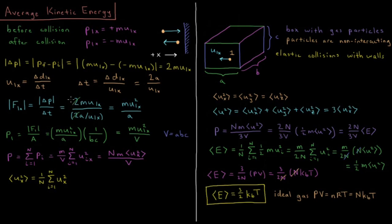So that equals: ΔP has magnitude 2MU₁ₓ, divided by the time between successive collisions, 2A over U₁ₓ. Since U₁ₓ is in the denominator of a denominator, it moves to the numerator, giving us MU₁ₓ² divided by A.